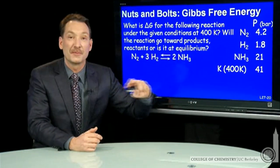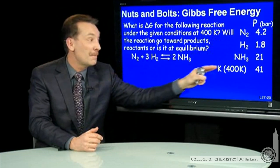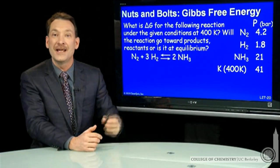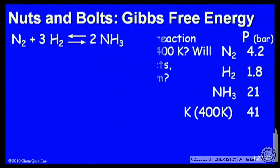We know the equilibrium constant is 41. So we can calculate a reaction quotient and compare it to the equilibrium constant and determine which way the reaction has yet to proceed. So let's do that.